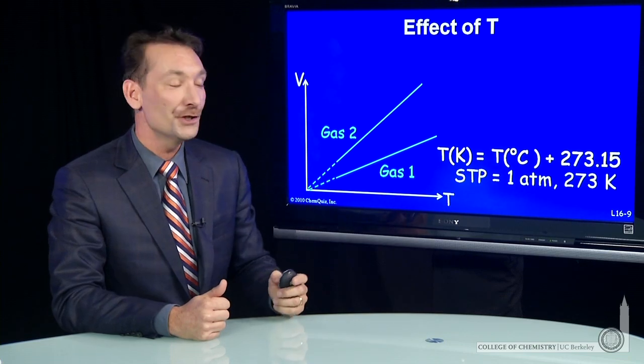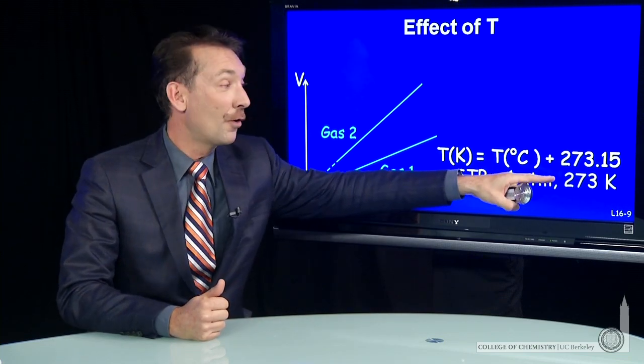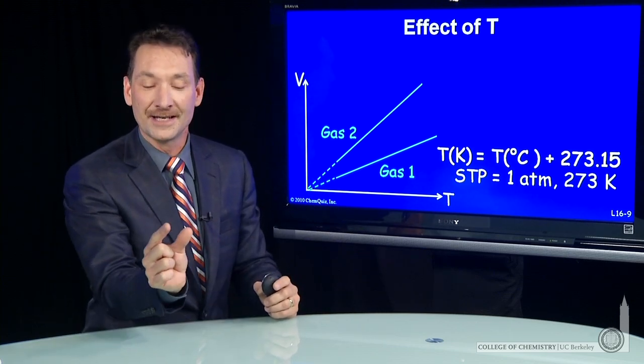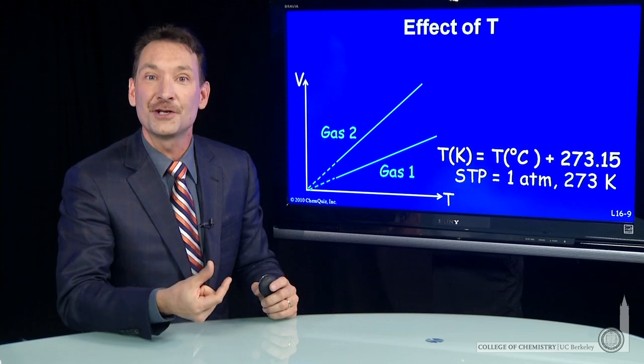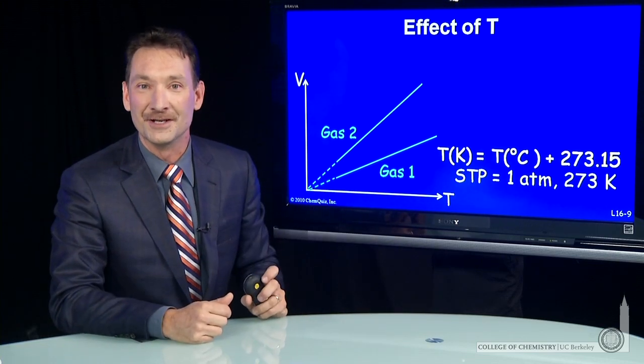Our standard temperature and pressure will be one atmosphere of pressure and zero Celsius, or 273 Kelvin. The Kelvin unit, the Kelvin degree, and the Celsius degree are the same size. The zero is offset by 273 degrees.